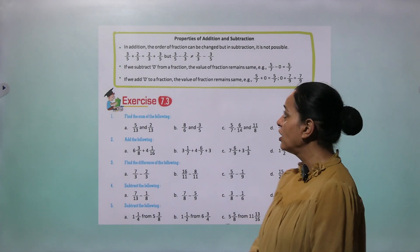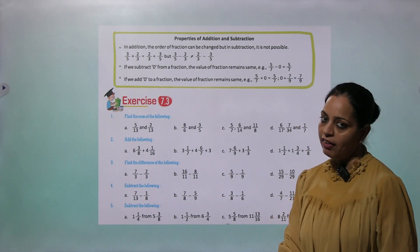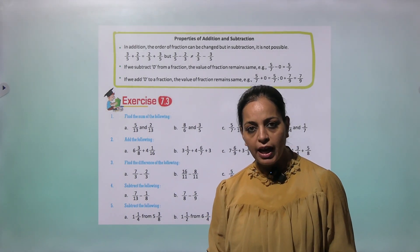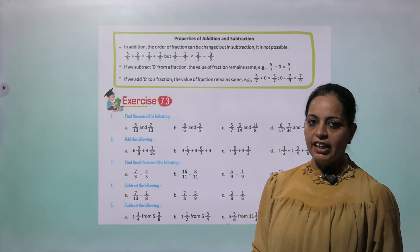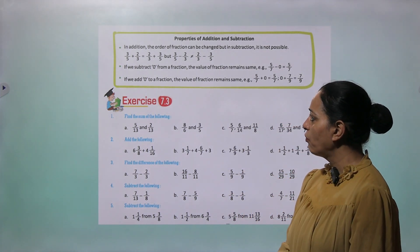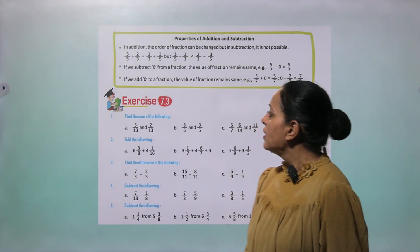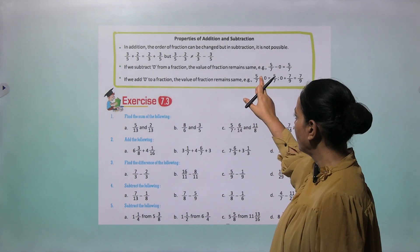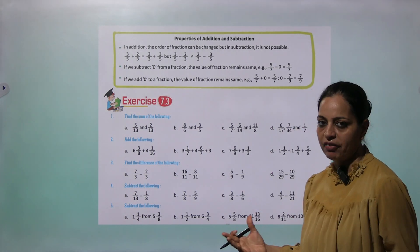Some properties of addition and subtraction: In addition, the order of fractions can be changed — for example, 2 plus 3 equals 3 plus 2 — but in subtraction we never change the order, since 3 minus 2 is 1 but 2 minus 3 gives a negative result. If we subtract 0 from a fraction, the value remains the same. If we add 0 to a fraction, the fraction remains the same. For example, 5 by 7 plus 0 equals 5 by 7, and 0 plus 7 by 9 equals 7 by 9.